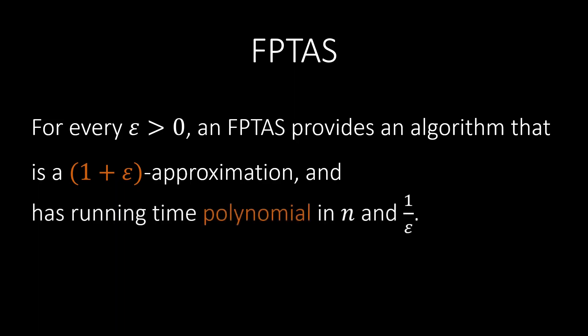The second property of the algorithm is that its running time is polynomial in n and 1 over epsilon. Naturally, the better we want to approximate the solution, the higher the running time will be. Better approximation means smaller epsilon. And this means 1 over epsilon will grow. The second property guarantees that the running time only grows polynomially in 1 over epsilon.